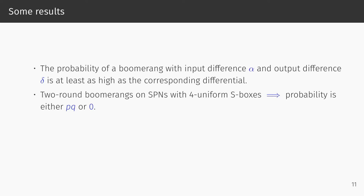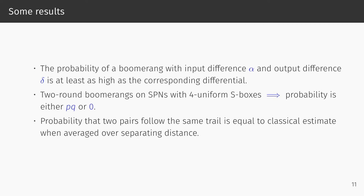The last result I want to present is somewhat redeeming for the classical boomerang estimate. The probability that two pairs of texts follow the same trail is equal to the classical estimate when averaged over the separating distance. This has two consequences. The first is that the probability of a boomerang distinguisher, which is made up of a large number of individual boomerangs, is likely to be close to the classical estimate. The second consequence is that the classical estimate should hold much better for those parts of a boomerang that are further away from the middle, where the separating distances are quite restricted.